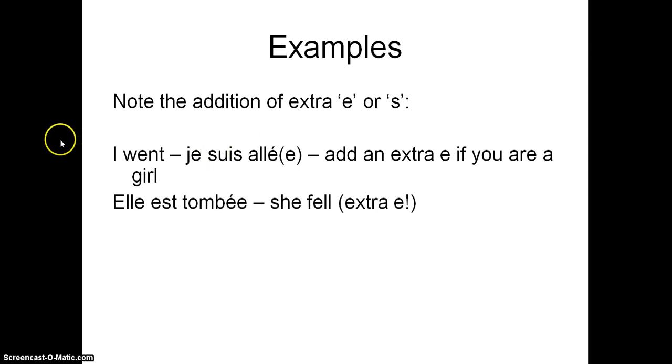Elle est tombée. She fell. She has fallen. Because it's a girl, we know it's a girl, we add an extra e on the end of the past participle. Ils sont arrivés. So this time we know it's masculine, plural. So we don't need to add an extra e, but we do need to add an s on the end because it's plural. Remember, this is just with être verbs, not with avoir verbs.